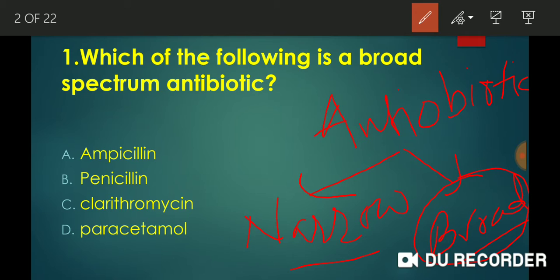Broad spectrum antibiotics act on gram-positive as well as gram-negative bacteria. Narrow spectrum antibiotics target only a specific group of bacteria, giving them a smaller range of action. Examples of broad spectrum antibiotics include ampicillin, amoxicillin, tetracycline, and chloramphenicol. Examples of narrow spectrum antibiotics include azithromycin and clarithromycin. So the answer to this question is option A — Ampicillin.